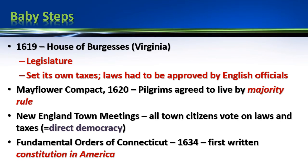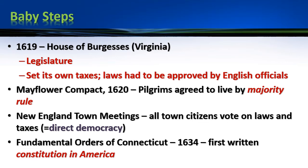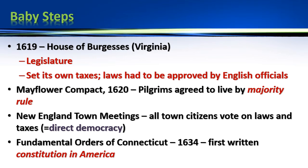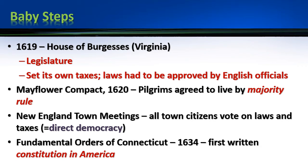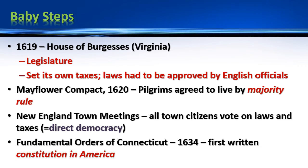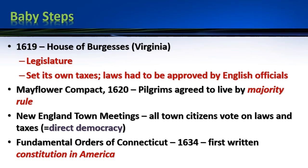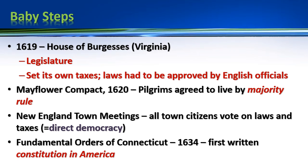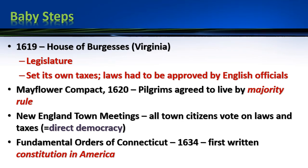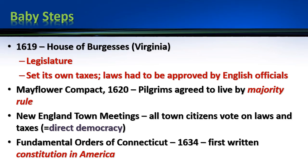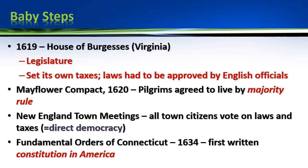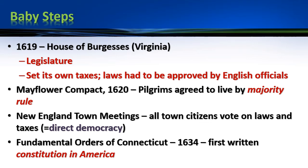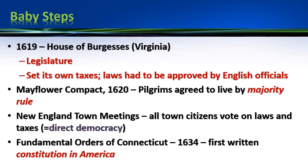So think about these baby steps: making laws for yourself, voting on your own taxes, living by majority rule, having a direct voice in your government, having a written constitution. These are pretty impactful steps in colonial America.